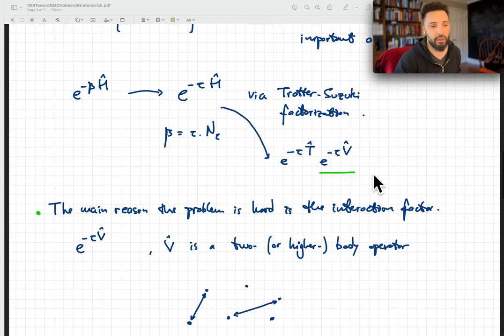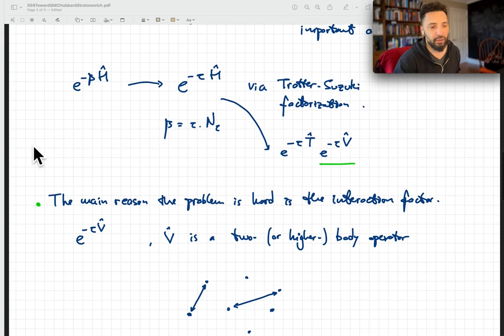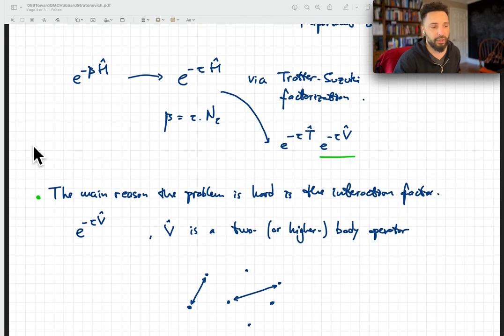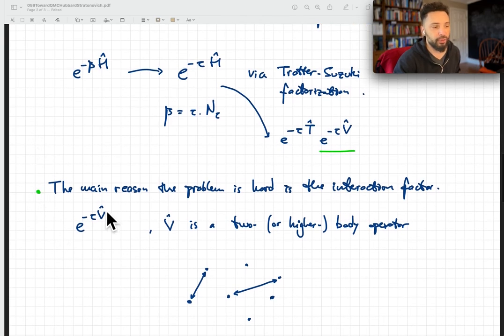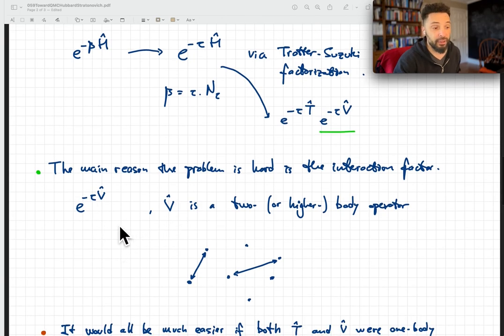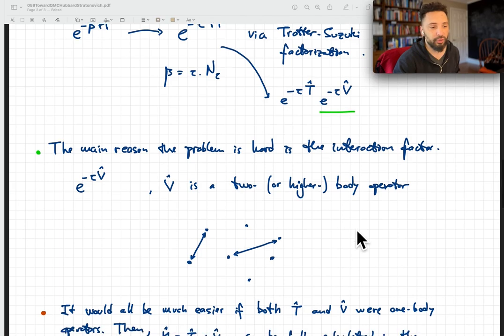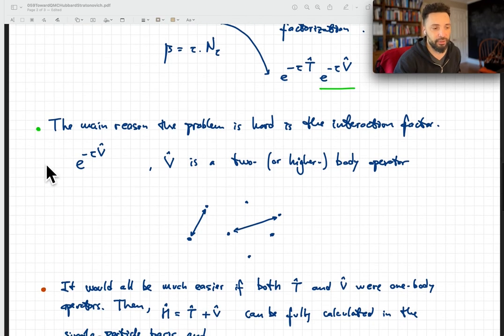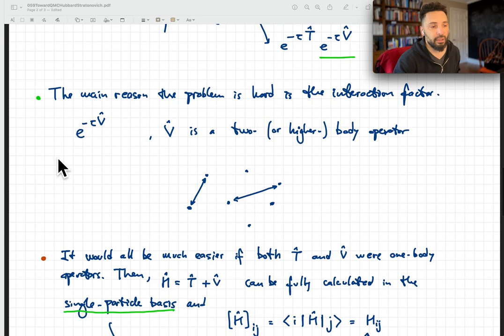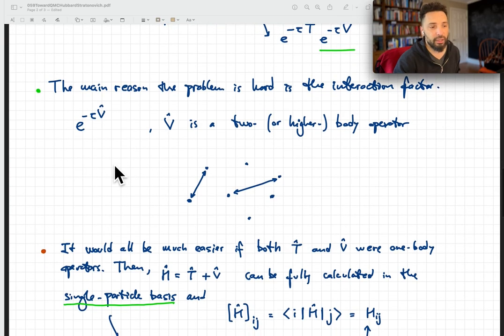We'll focus on this object. This is in fact the main problem because it contains the interaction. If all we had was just a kinetic energy, then we will have a free non-interacting gas of particles. Our focus is on e to the minus tau V, and V in the simplest non-trivial case would be a two-body or higher-body operator.